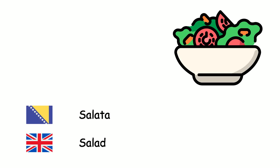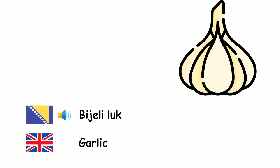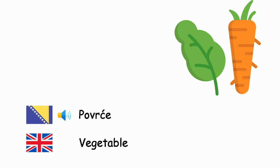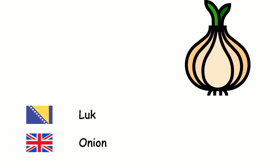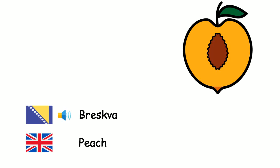Krastavac. Bijeli luk. Povrće. Luk. Repa. Breskva. — Cucumber. Garlic. Vegetable. Onion. Turnip. Peach.